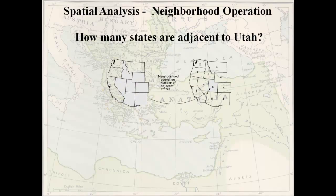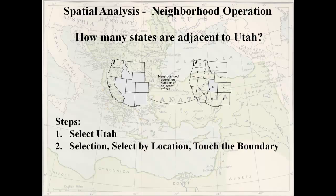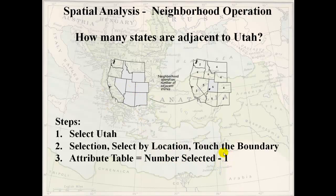Neighborhood operation: how many states are adjacent to Utah? We're only concerned with Utah. First, select Utah using any selection method inside ArcMap. Then do a spatial selection — select by location — picking your target layer, source layer, and the spatial relationship. Select from states all features whose boundary touches Utah's boundary. The output is a selected feature class with all adjacent states, but it will also include Utah itself, so you'll need to subtract one from the count in your head.